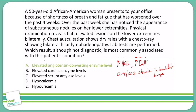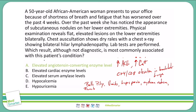Other things associated with sarcoidosis include Bell's palsy, uveitis, lupus pernio, erythema nodosum, and rheumatoid arthritis-like arthropathy. The treatment for sarcoidosis is steroids.